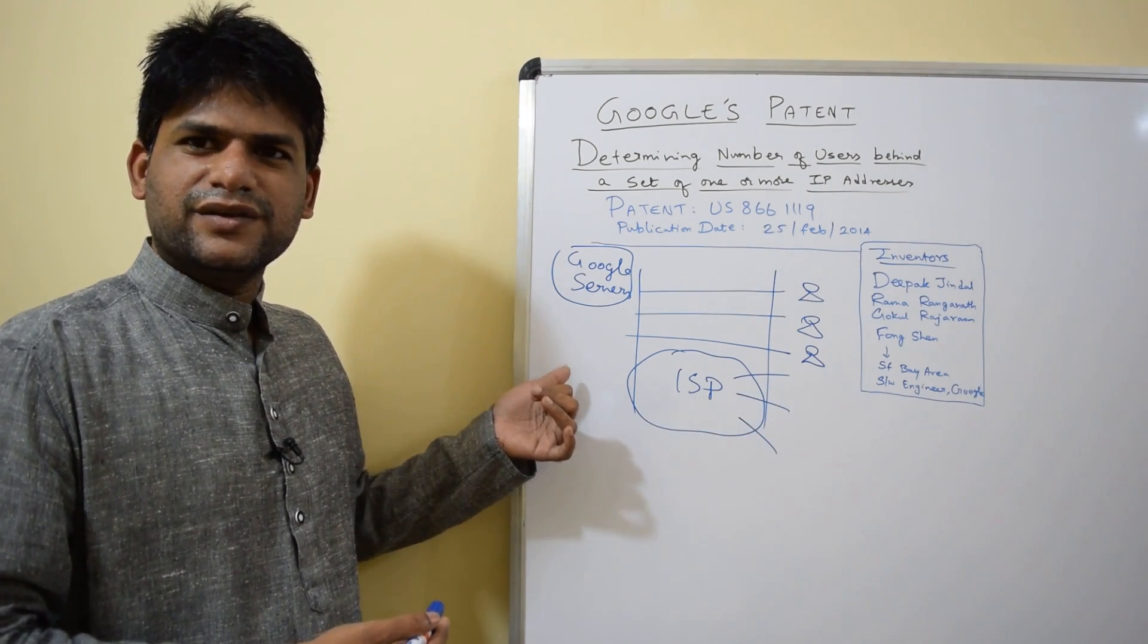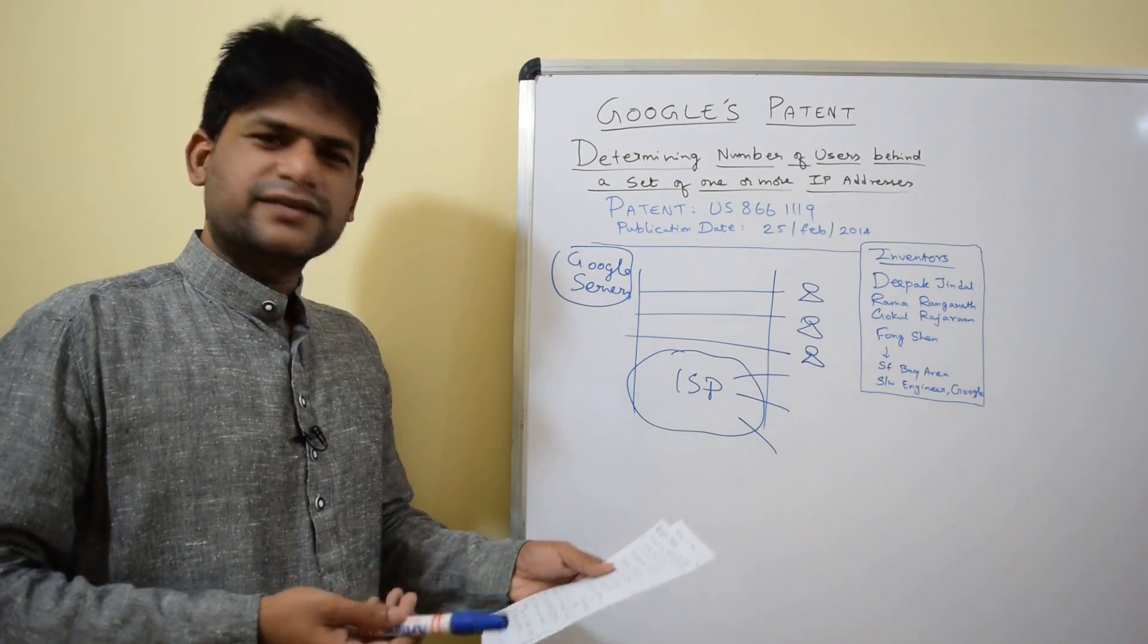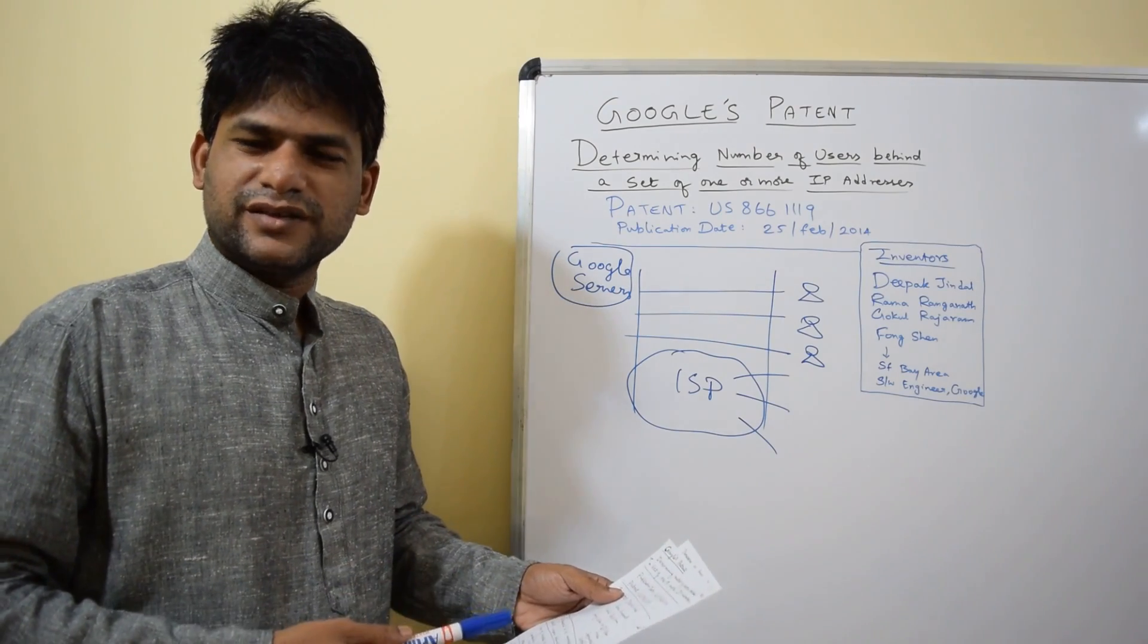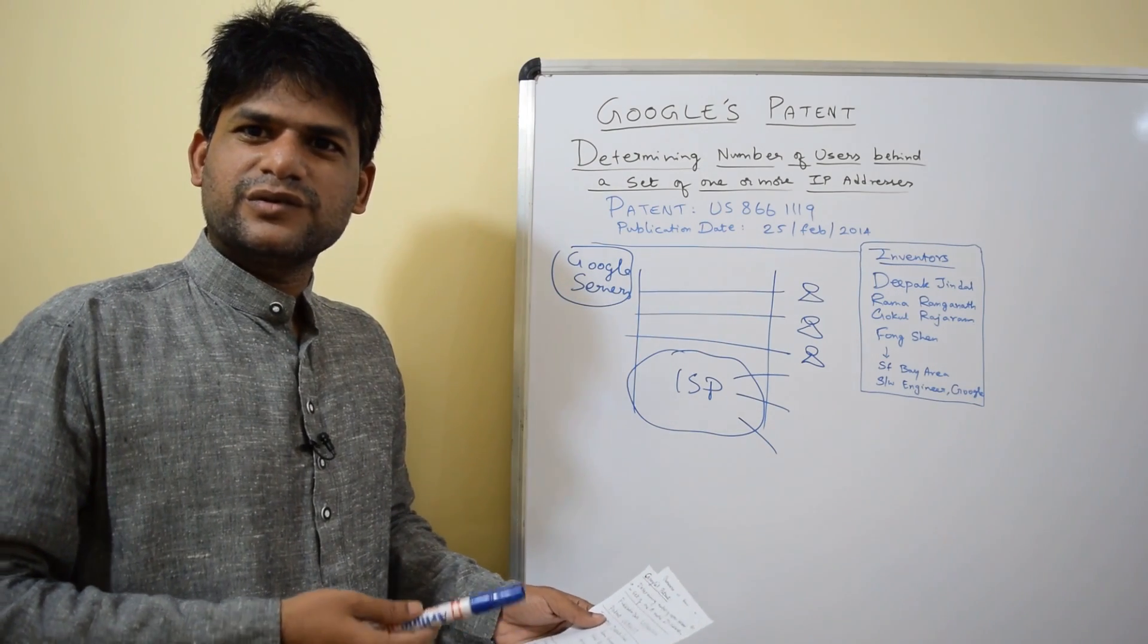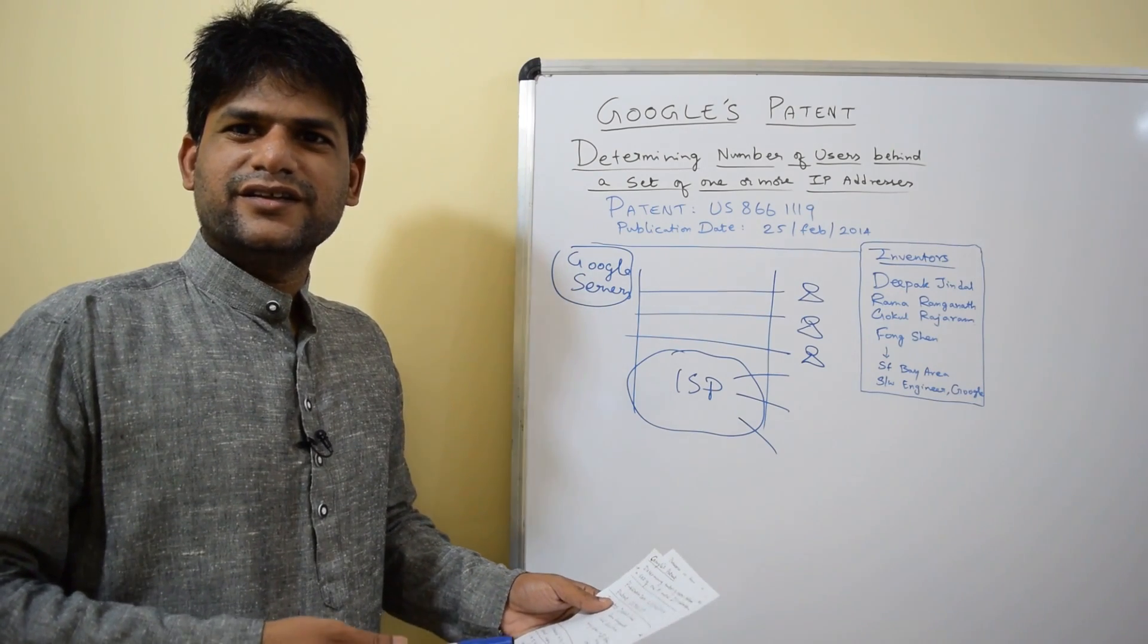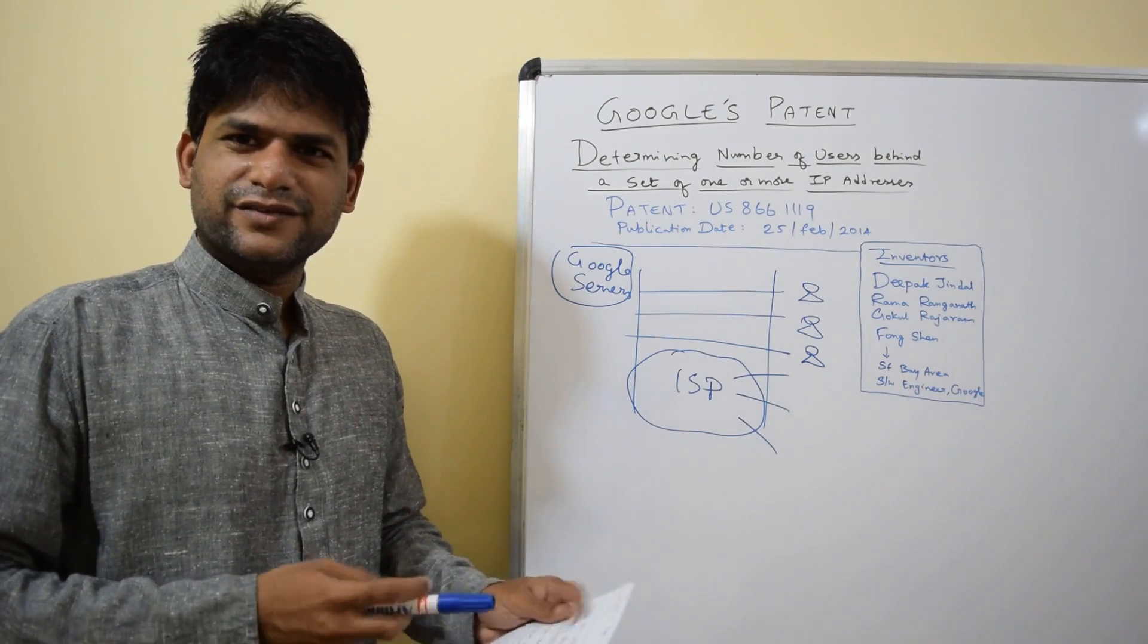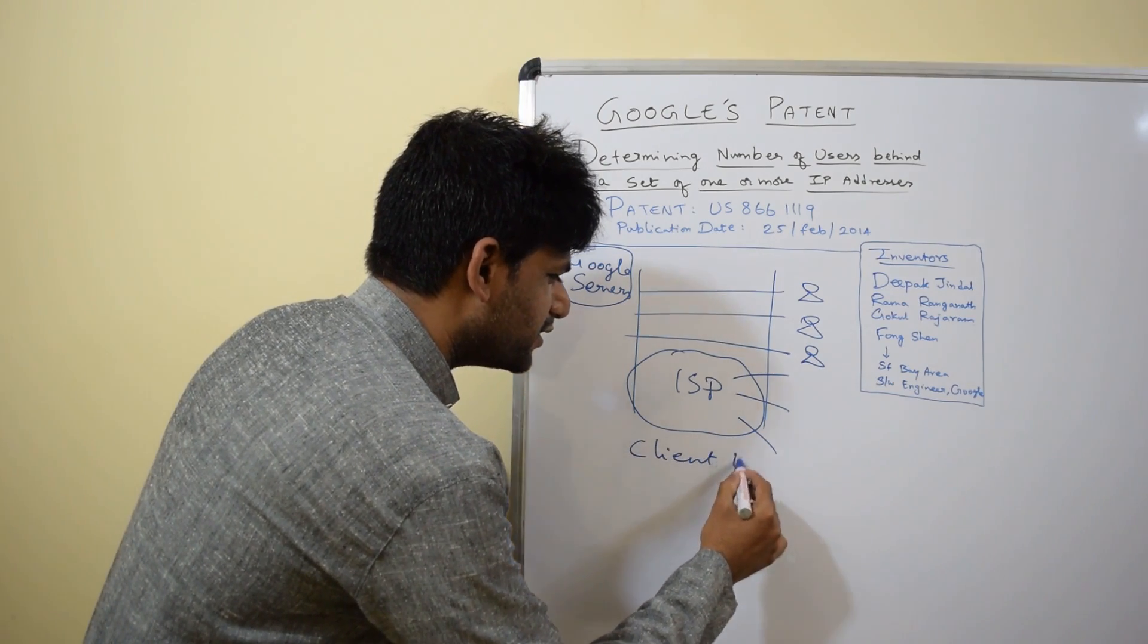The patent discusses cases where cookies are disabled in a browser or if users access Google accounts through incognito mode or private browsing. In that case, Google uses something called client identifiers - a term they coin in the patent.